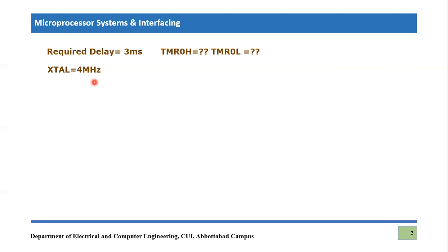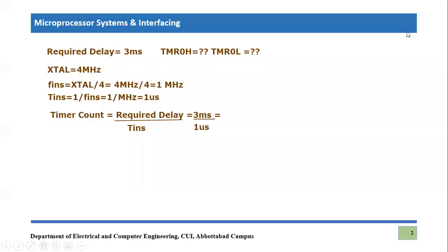First of all, we need to calculate the instruction frequency. Instruction frequency can be calculated using the formula we have already learned in earlier lectures — it is dependent on the crystal oscillator. So instruction frequency equals Fosc divided by 4, which is 4 MHz divided by 4, giving us 1 MHz.